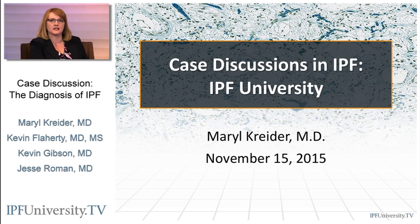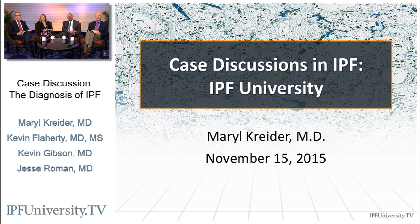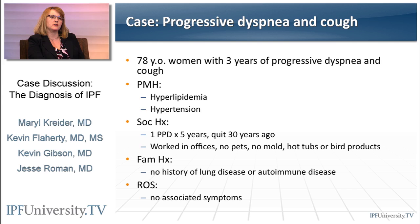For this discussion, we will be using a recent case of a 78-year-old woman with three years of progressive dyspnea and cough. Her past medical history is significant only for hyperlipidemia and hypertension. She has a small smoking history of one pack per day for five years but quit 30 years ago. Her career has always involved working in offices, and she denies any significant pet, mold, hot tub, or bird product exposures. Her family history was negative for lung disease or autoimmune disease, and her review of systems was remarkably negative in entirety.